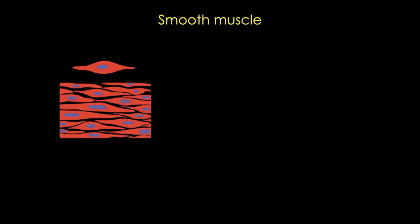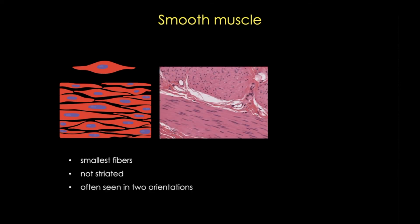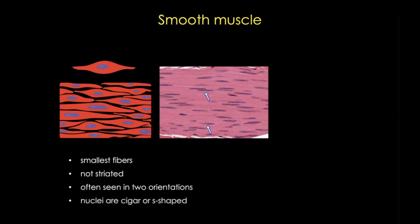Smooth muscle cells are quite different than either skeletal or cardiac muscle cells. They're much, much smaller, they're not striated, and they're unbranched. One trick to identifying smooth muscle is that it's very often seen in two orientations, such as here in the duodenum. The nuclei also have a characteristic cigar or S shape that you can see in this magnified image.